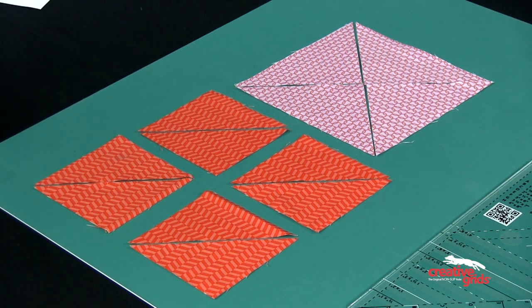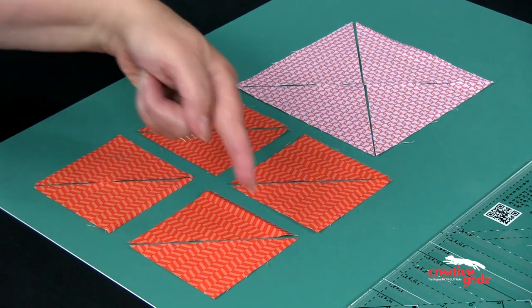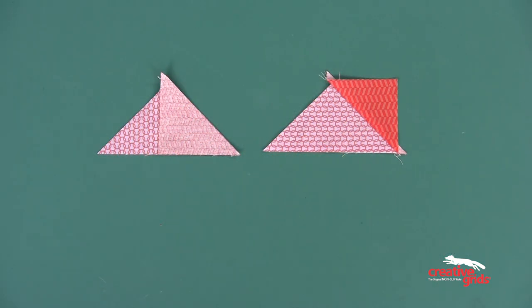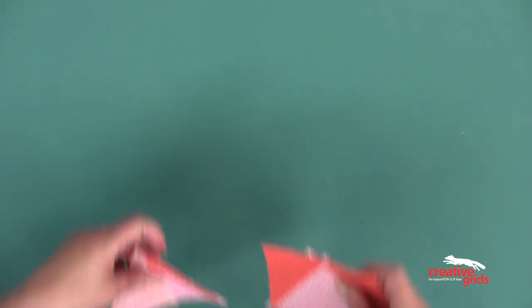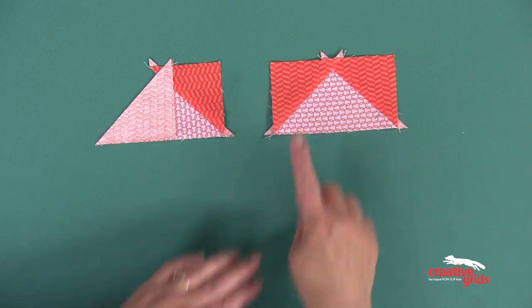Cut each of the four smaller squares once on the diagonal. The yield will be eight sky triangles. Sew a sky triangle to one side of a goose triangle and press open. Add a second sky triangle and press open.